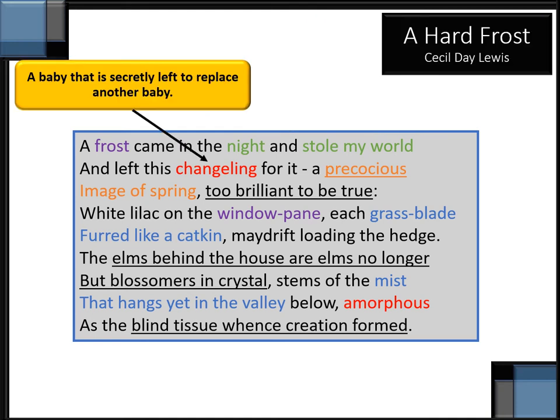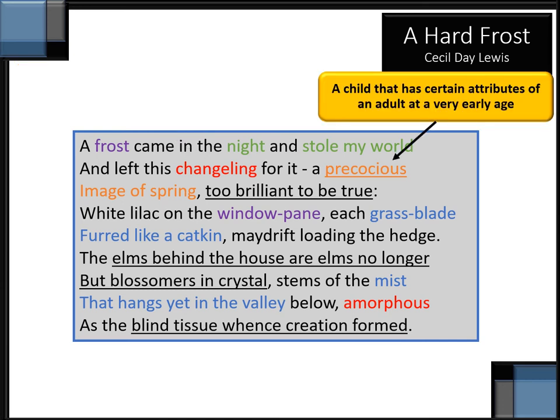This links to the word 'changeling' — a baby that is secretly left to replace another baby. In this instance, the frost came and it changes the world that was there the previous day. 'A precocious image of spring' — the word precocious here refers to a child that has certain attributes of an adult at a very early age, ripe before the time.